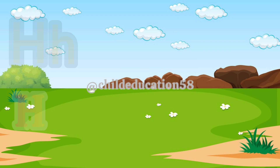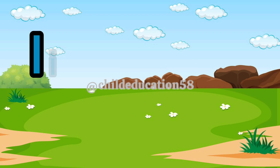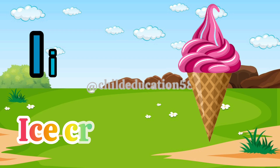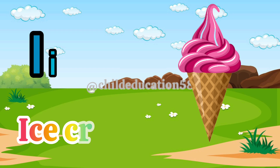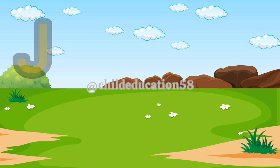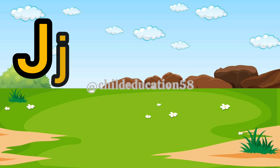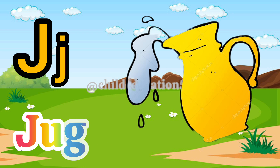Capital H, small h, H for horse. Capital I, small i, I for ice cream. Capital J, small j, J for job.